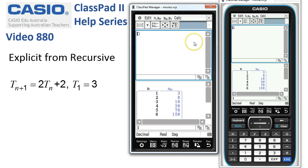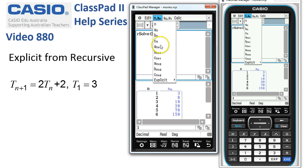And to find what the explicit rule for this sequence is, we're going to go to the calc rsolve menu. There's not many items there. And then we're going to rebuild our sequence. We could have cut and paste it from the previous window. But here we go.